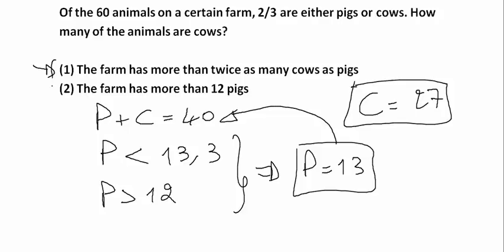So when I combine both statements, I can determine the number of cows exactly, which is 27. So the first statement is not sufficient. The second statement is not sufficient. And both together are sufficient. So the answer to this question is C.